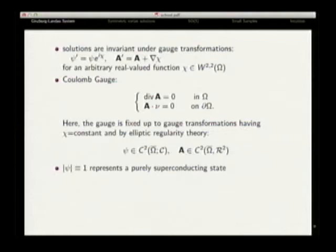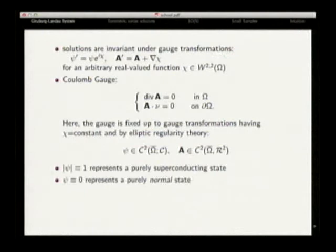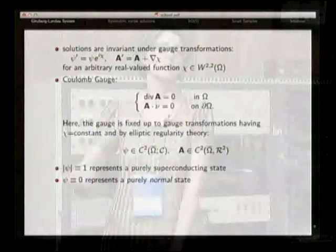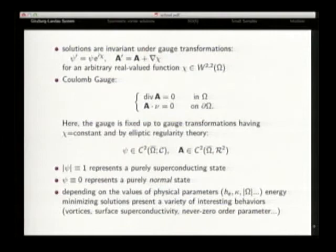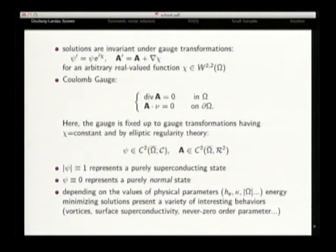The idea — going through these slides for a question asked at lunch — is that the length of this complex-valued function, which is a wave function in the classical sense of quantum mechanics, represents a purely superconductive state when it's equal to one. If it's identically equal to zero, that means there are no Cooper pairs, so the material is not in the superconductive state. Depending on physical parameters — intensity of magnetic field, applied magnetic field, the Ginzburg-Landau parameter, and the size of the domain — you have a variety of interesting behaviors: vortices, surface superconductivity, never-zero order parameter.